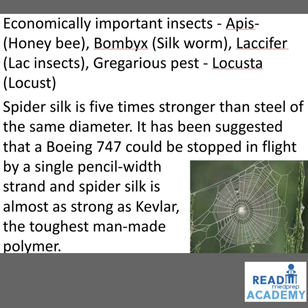Economically important insects: Apis, the honeybee; Bombyx, the silkworm; Laccifer, lac insects; gregarious pest Locusta, the locust. Spider silk, whose image is given on the right side, is five times stronger than steel of the same diameter. It has been suggested that a Boeing 747 could be stopped in flight by a single pencil-width strand, and spider silk is almost as strong as Kevlar, the toughest man-made polymer.